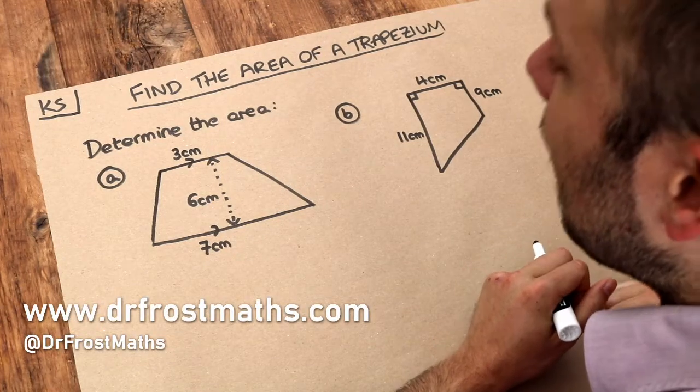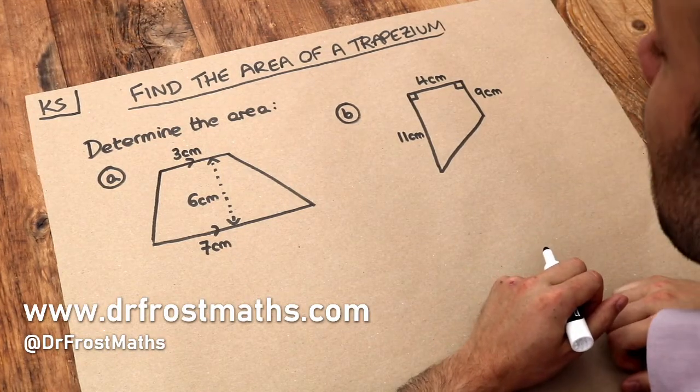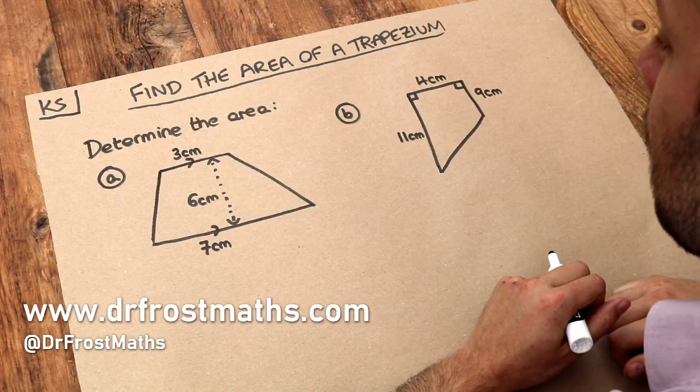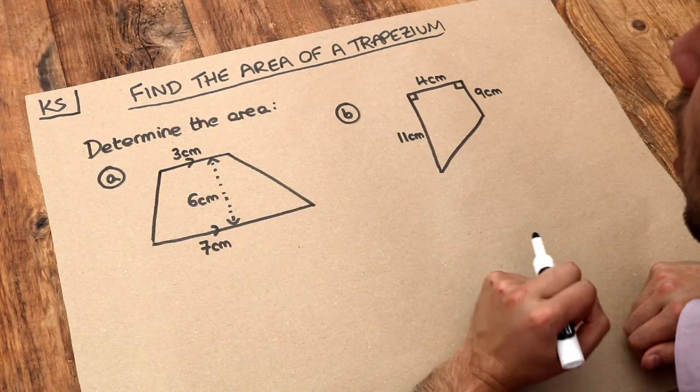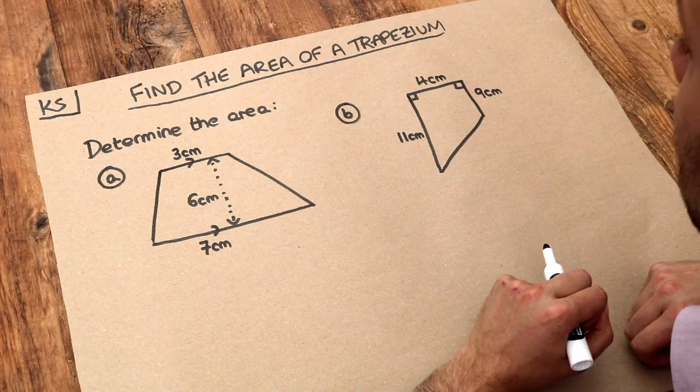Hello and welcome to this Dr Ross Mass key skill video on finding the area of a trapezium. Now in case you've forgotten what a trapezium is, it's just a 2D quadrilateral where you have a pair of parallel sides.